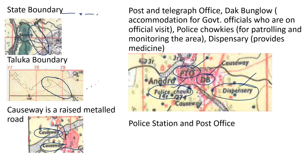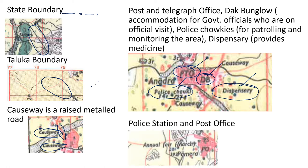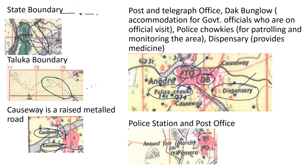Let's look at PS and PO. PS is police station — as mentioned, when you register your FIR, investigation will be done there. PO is for post office. One interesting thing is annual fair: if annual fair is written on the map, it means trading is done annually in that fair.